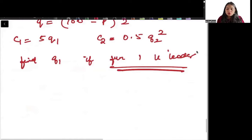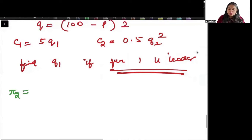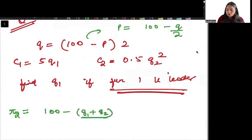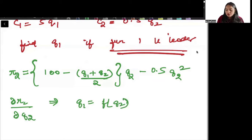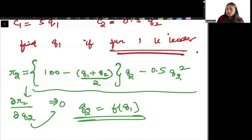In the exam you won't have time to solve this thoroughly unless you remember the formulas. You need to follow backward induction — solve the profit function of firm 2 first. From the demand function, P = 100 - Q/2. Write the price function, multiply by Q₂, subtract firm 2's cost function, and maximize with respect to Q₂ by differentiating and equating to 0. This gives you Q₂ as a function of Q₁.